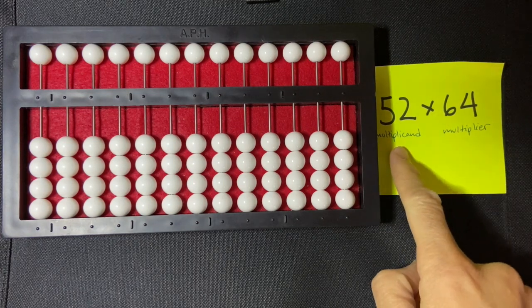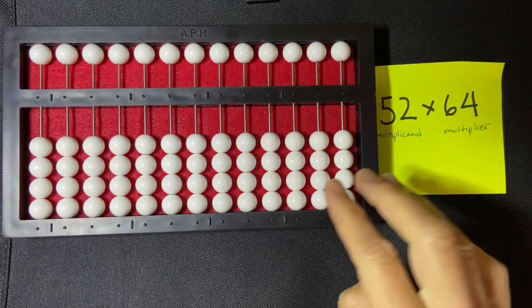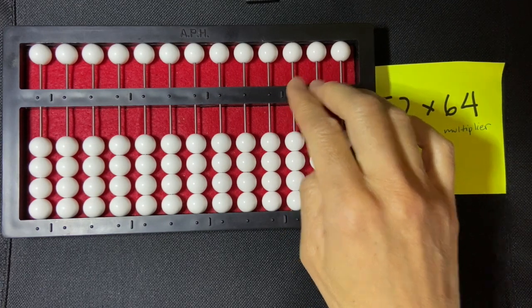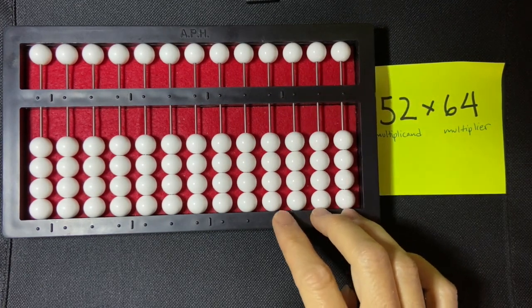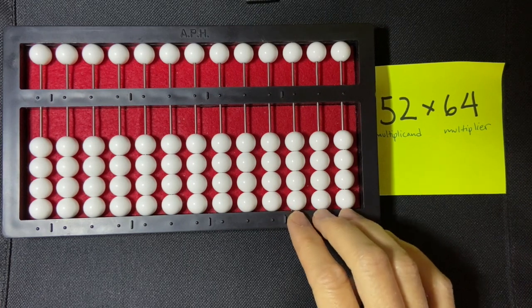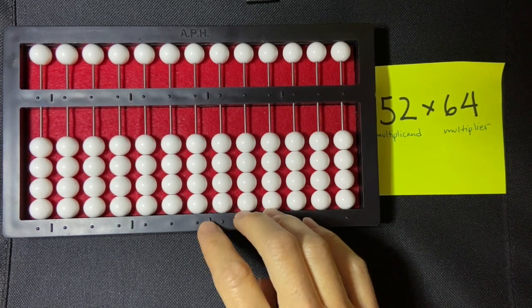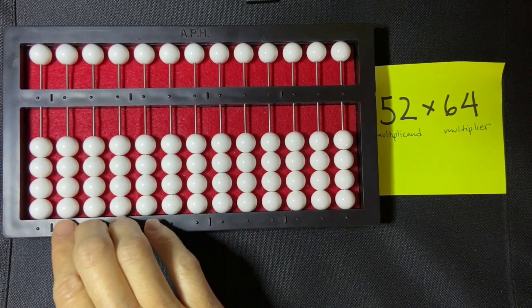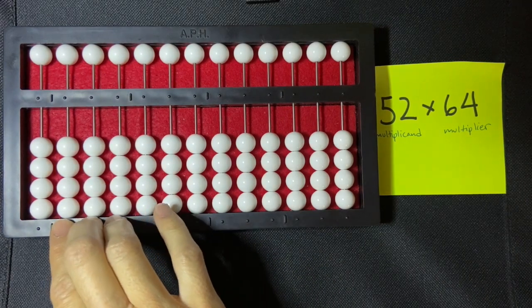Let's start by setting our multiplicand in the billions period. So I'm going to feel for my unit marks, and I can do that on the counting bar or down here below. And so my unit mark is here, so I have my hundreds period, unit mark, thousands period, unit mark, millions period, unit mark, and then my billions period where I'm going to set my multiplicand.